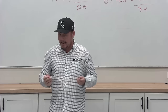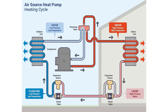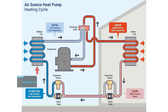In heat mode, if your outdoor coil — the artist formerly known as the condenser coil — is dirty, that causes low suction, which causes high compression ratio, which equals bad efficiency.